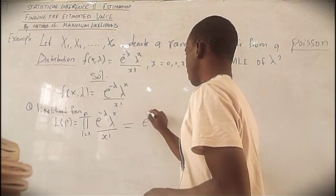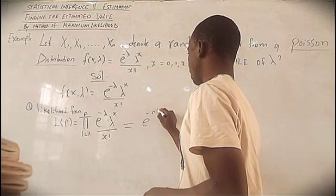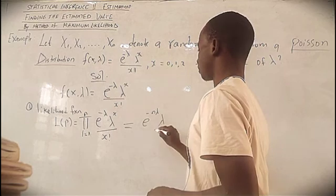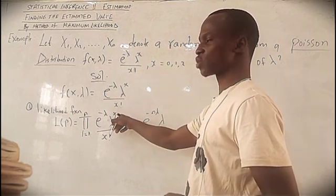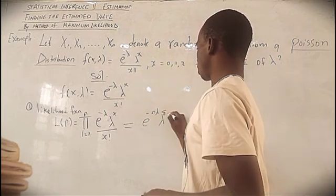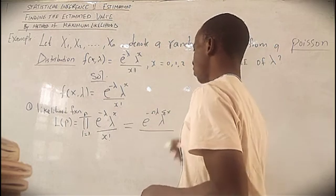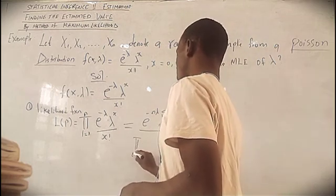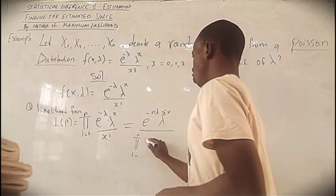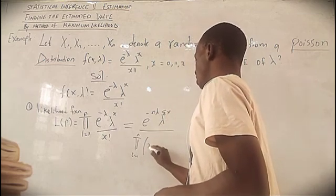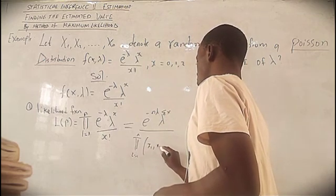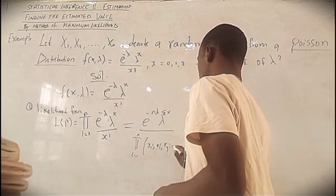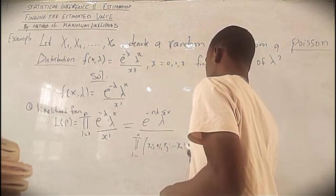So now we have the likelihood as: exp(−nλ) · λ^(Σx) over x1! · x2! · x3! · · · xn!. You can see that the product over the exponential terms gives exp(−nλ), and the product of λ^xi gives λ raised to the summation of x.